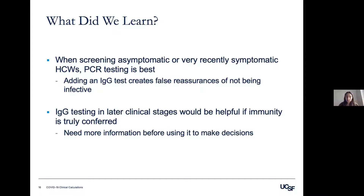Many serological studies have found that detection rates of antibody tests really increase around the third week after symptom onset, which aligns with our finding that IgG testing may be an effective approach only in the later stages of disease. But while antibody testing is crucial for epidemiologic studies, using them for policy decisions may have unintended harmful effects until we have greater understanding of COVID-19 immunity.